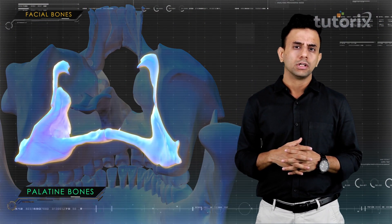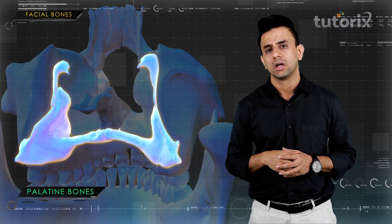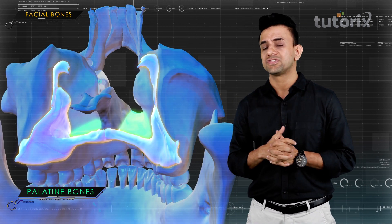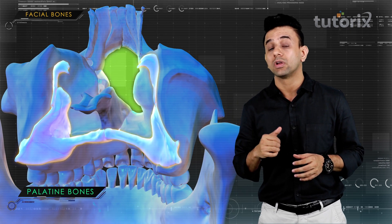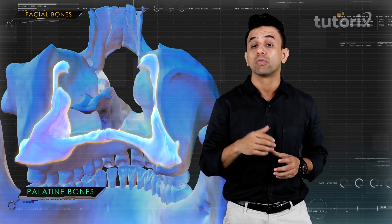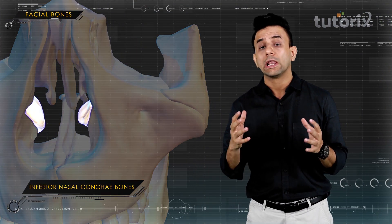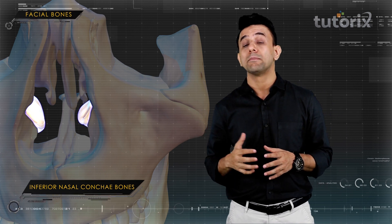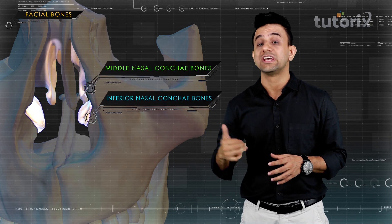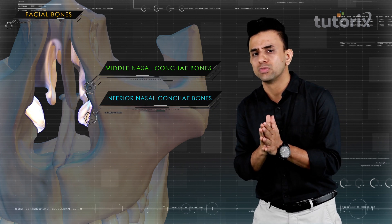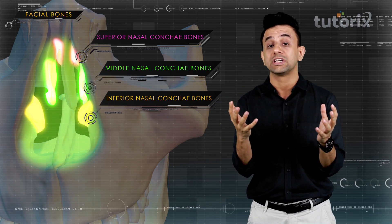The palatine bones are also paired — two in number — and are L-shaped. They form part of the posterior region of the hard palate, part of the floor and lateral wall of the nasal cavity, and part of the floor of the orbit. The inferior nasal conchae are also paired — two in number — and lie inferior to the middle nasal conchae, projecting into the nasal cavity. All three pairs of nasal conchae — superior, middle, and inferior — increase the surface area of the nasal cavity and filter the air entering from the nasal cavity into the lungs.